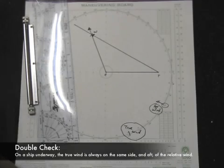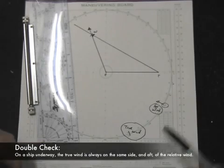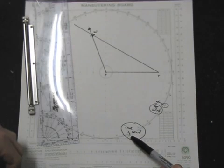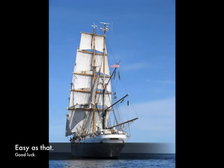A double check is that on a ship that's underway, the true wind is always aft and on the same side of the relative wind. So that's our heading, the apparent wind, and the true wind aft on the same side. And that's it. Good luck on your test.